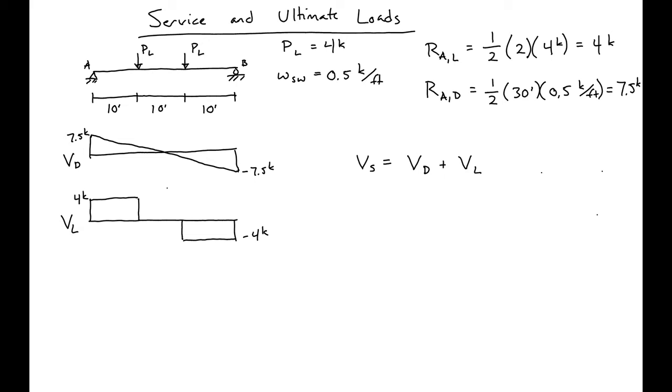If we were to draw our diagram for our service load, we'll go up a distance equal to the reaction at the support due to our self-weight and our live load. We'll have a slope equal to our self-weight, go down equal to the point load, slope, down, slope, and then we're back up.